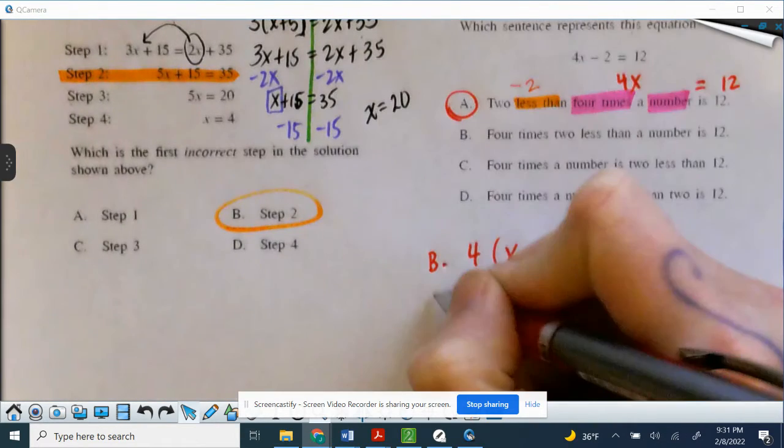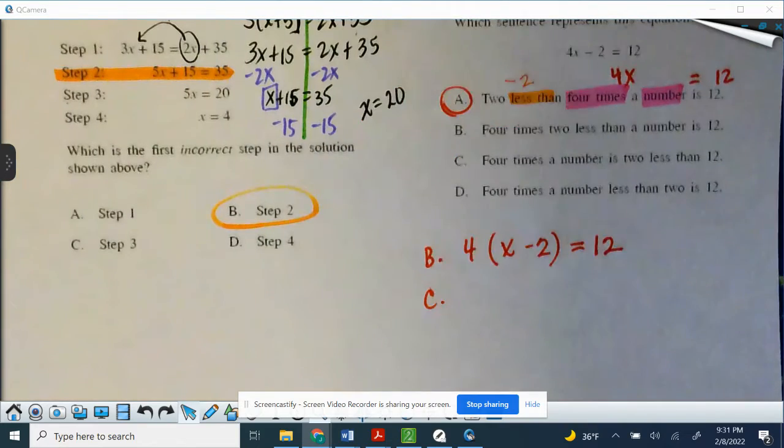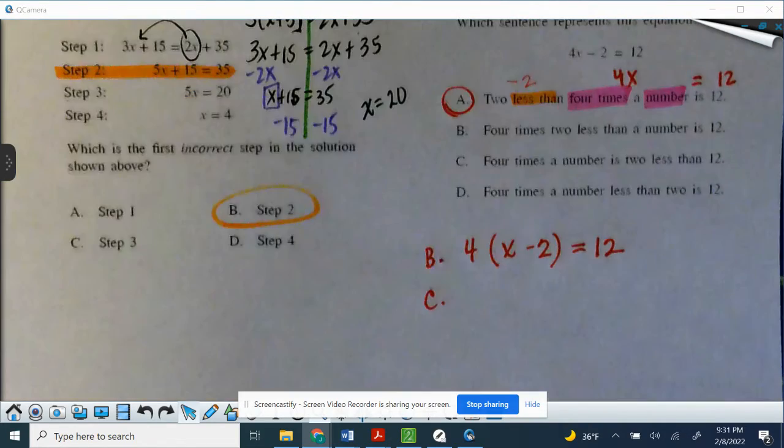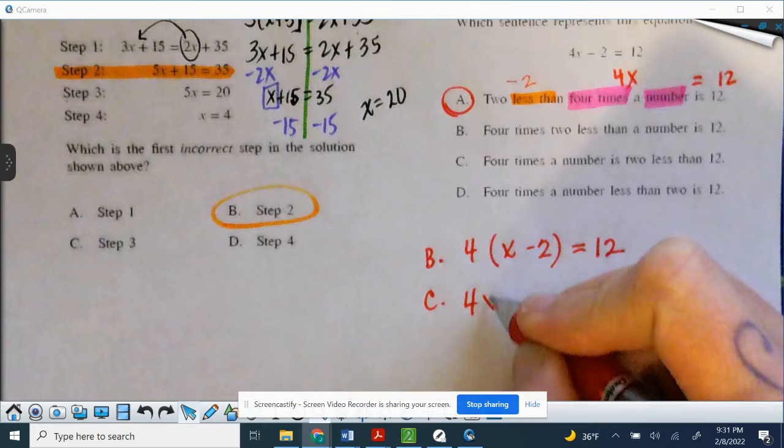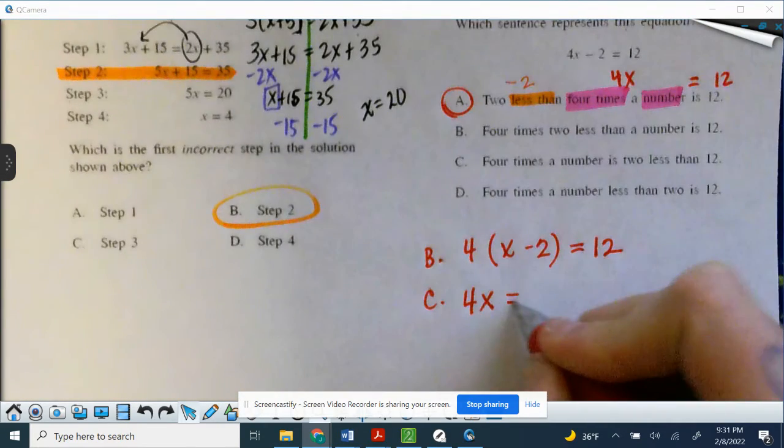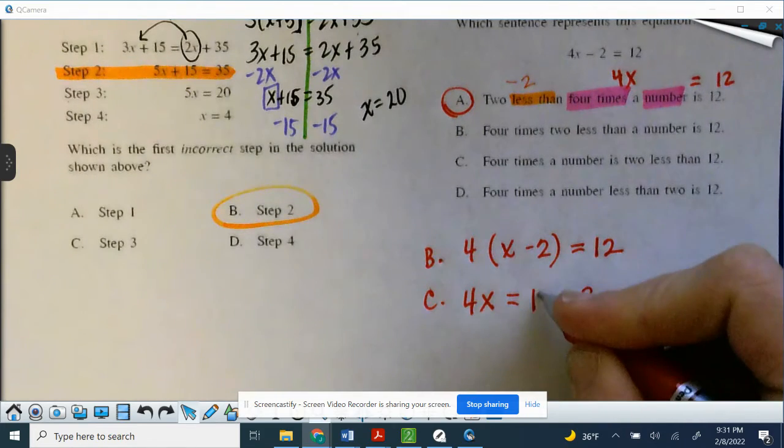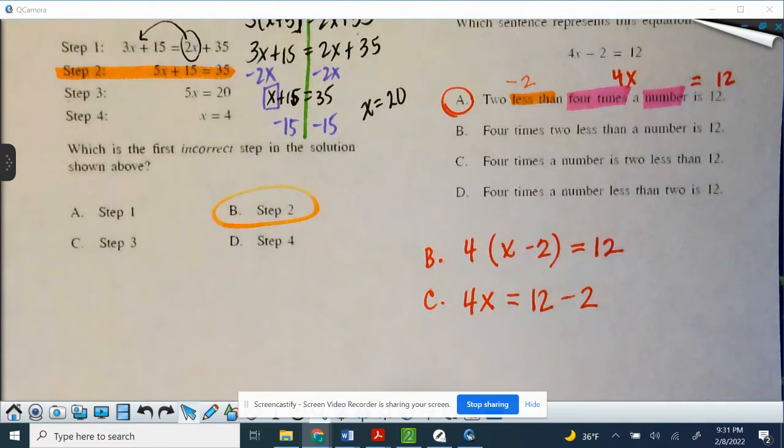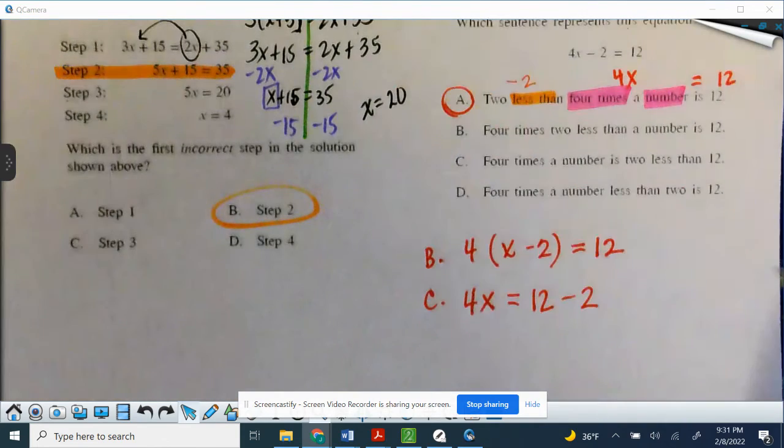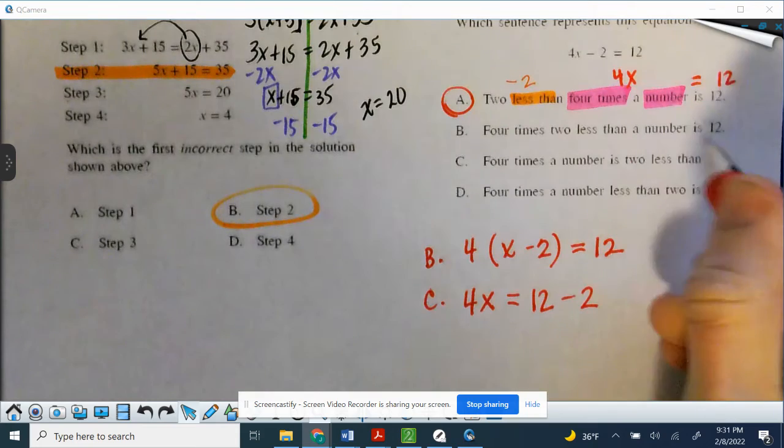C, 4 times a number is 2 less than 12, so 4 times a number is, so that's our equal to, 2 less, so we know that's minus 2, then 12. So C is 4 times a number is, which is equal to, is is equal to always, 2 less than 12. So 2 less than means that it comes after the minus.